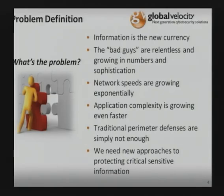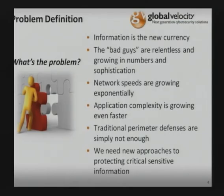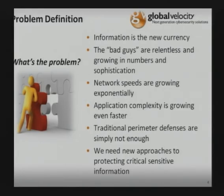So, problem definition. First, information is the new currency — we've moved to a digital environment. We're no longer dealing just with college kids who want to get their name in the paper. The bad guys are growing in sophistication and are relentless. We have an entire cyber criminal environment that's a very big business, growing in size, complexity, and sophistication. We also have nation-state espionage to worry about today.